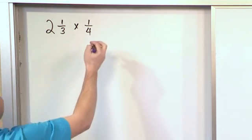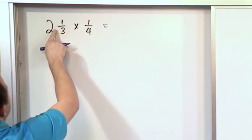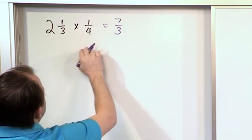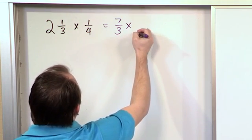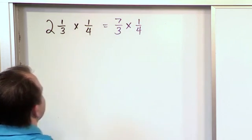And in order to do that we have learned that we want to convert the mixed numbers. So here we have three times two is six plus one is seven. So that would be seven thirds because we always write it over the denominator. And then we're going to multiply by one fourth.